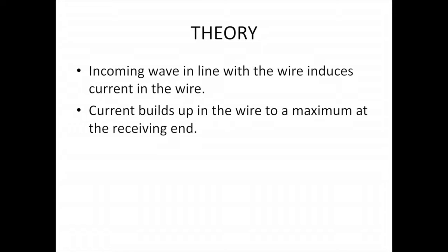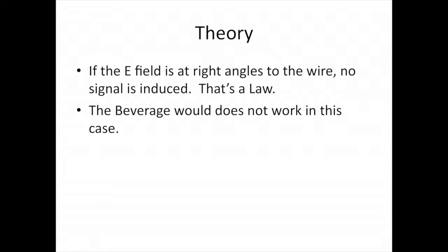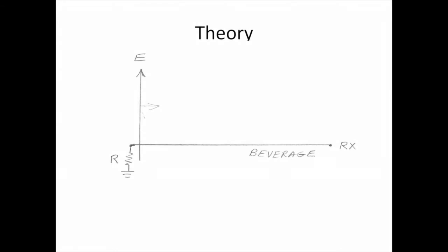Now the theory of the beverage. The incoming wave in line with the wire induces current in the wire. Current builds up in the wire to a maximum at the receiving end. Signals from the opposite direction will build up at the opposite end of the antenna from the receiver, and they are usually dissipated in a resistance. Now the theory says that if the electric field is at right angles to the wire, no signal is induced. That's one of your electrical laws. The beverage would not work in this case.